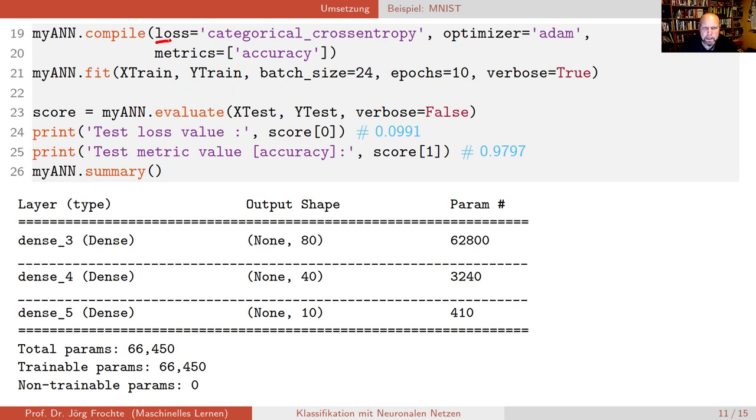Also sagen wir beim Compile auch mal was anderes. Wir sagen jetzt nicht Mean Square Error, sondern wir sagen, ich hätte gerne eine Kreuzentropie. Beim Optimierer bleiben wir beim Adam. Und weil es ja jetzt eine Klassifikation ist, übergeben wir den Wunsch, dass wir gerne während der Optimierung und auch für hinterher eine zusätzliche Metrik berechnet hätten. Hiernach wird nicht optimiert, Achtung, die wird nur mitberechnet. Aber es interessiert uns so sehr, dass wir die gerne im Output auch sehen wollen, nämlich die Genauigkeit, die Accuracy. Hier ist die Batch Size. Wir geben nur 10 Epochen weiter.